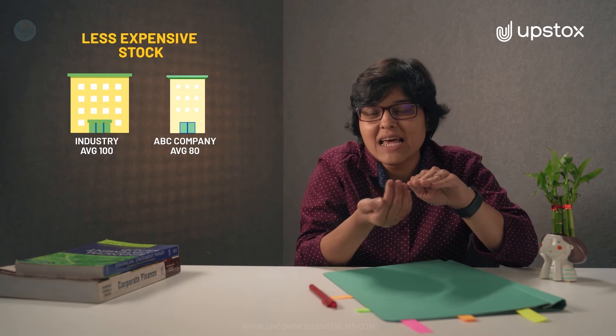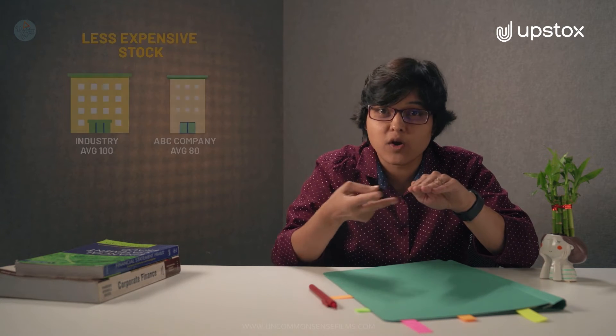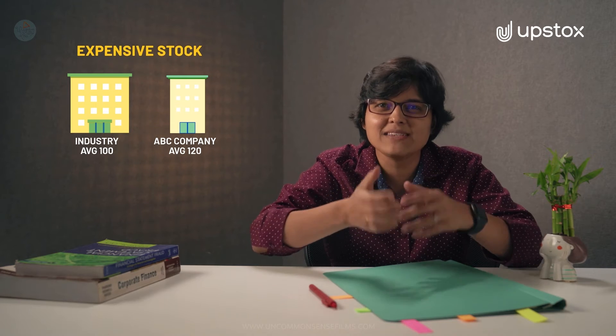Assume that the industry average is 100 and the stock PE is 80. In that case, I can say that the stock is comparatively less expensive. But on the contrary, if industry PE is 100 and if the stock PE is 120, then I can say that the stock is a little bit expensive as compared to the industry.